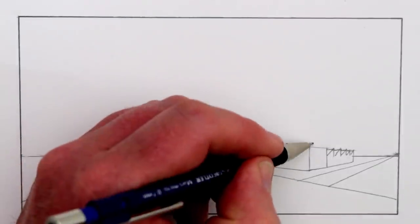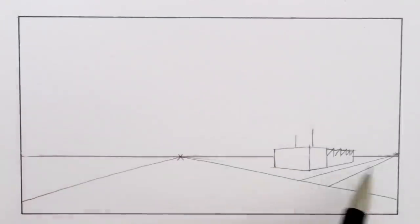I think I'll add a slightly taller building here. Again I keep the vertical lines straight and the diagonal lines will go to either the left or the right vanishing points.